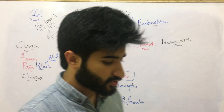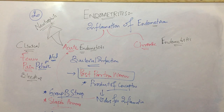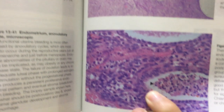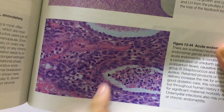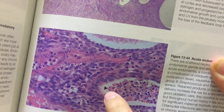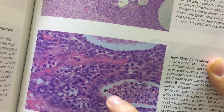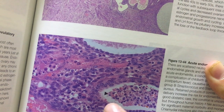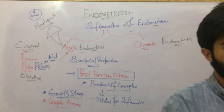Now let me show you a diagram of acute endometritis. In this picture, you can see there is a polymorphonuclear neutrophil. This is a diagram of the endometrium, and this endometrium is showing polymorphonuclear neutrophils. Hence, this condition is acute endometritis.